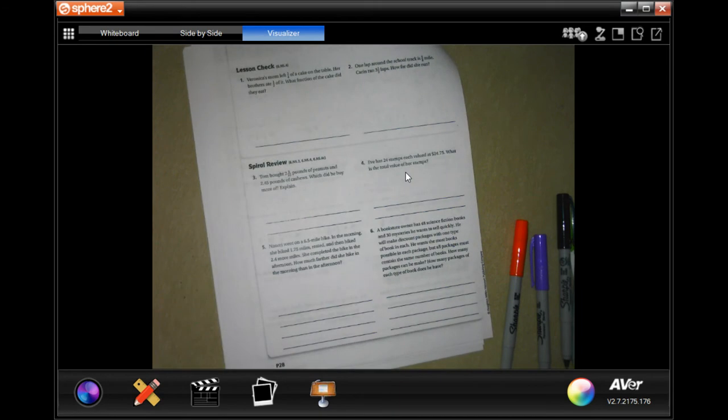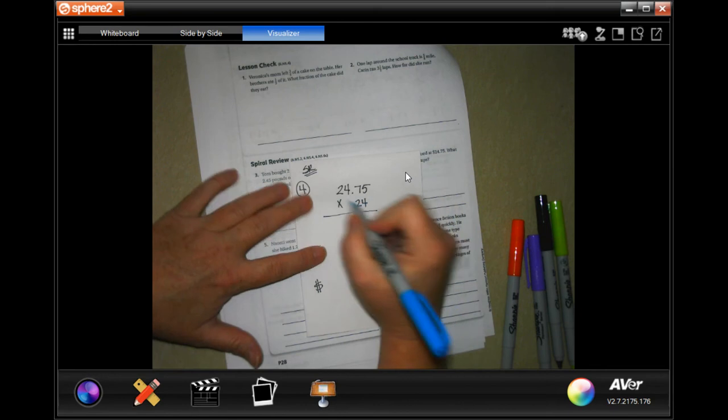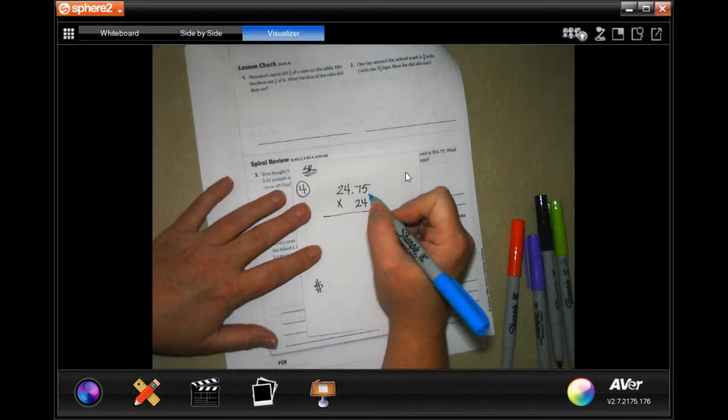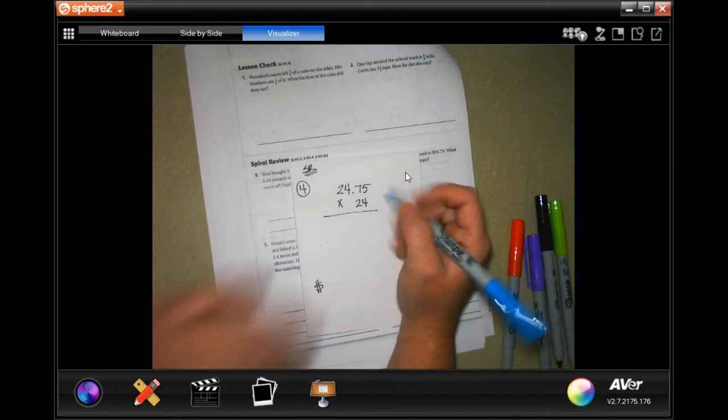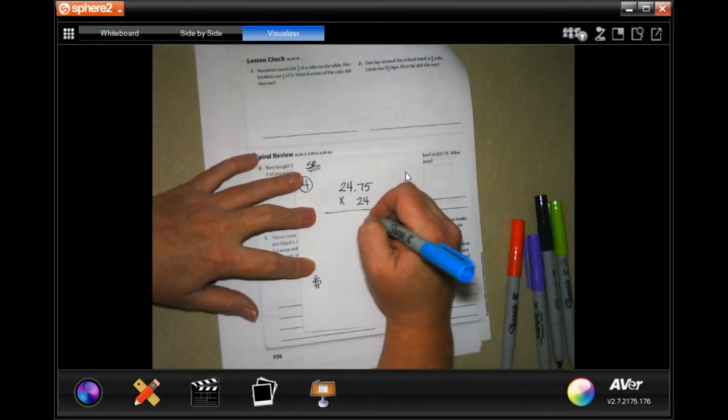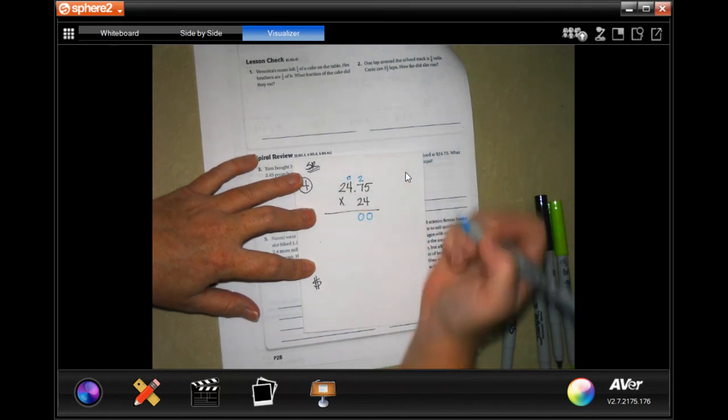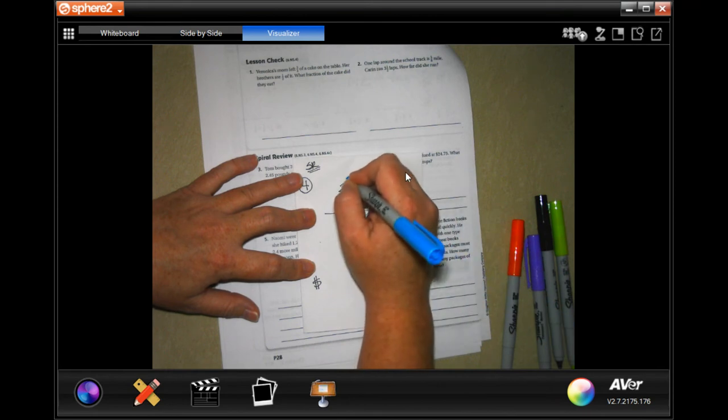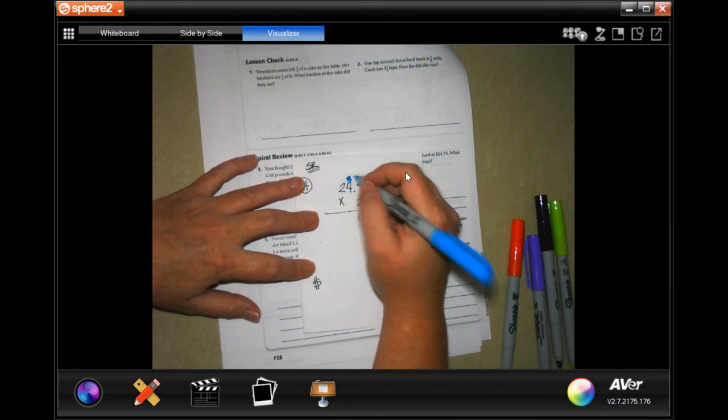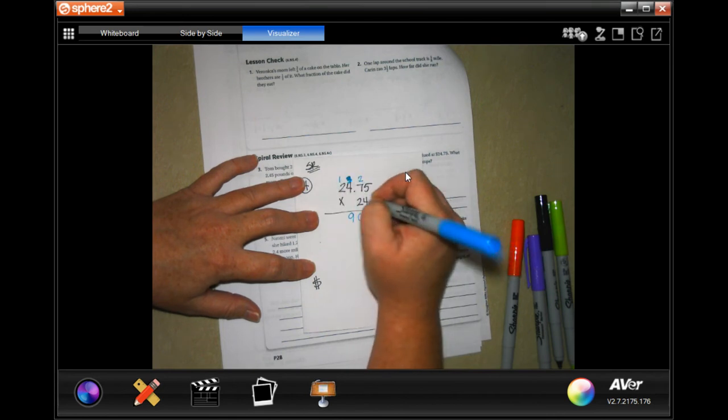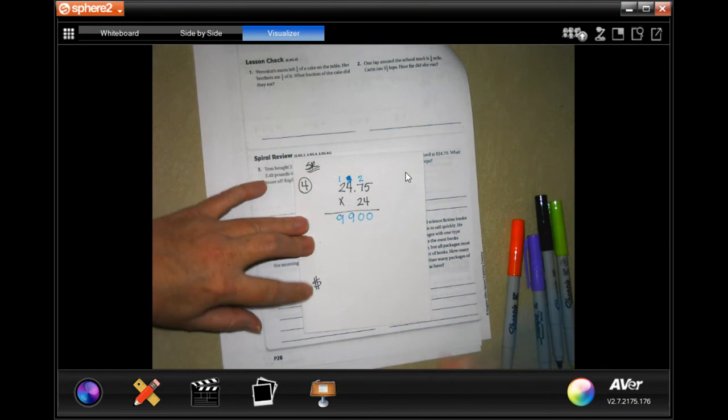We are going to go to number four on the back, which says, Eve has 24 stamps, each value is $24.75. What is the total value of her stamps? Each stamp is worth $24.75 and she has 24 of them. We just need to find out how much that is. 4 times 5 is 20, 0 down, carry your 2. 4 times 7 is 28, plus 2 more is 30. Here's 3, not 0. 4 times 4 is 16, plus 3 more is 19. 4 times 2 is 8, plus 1 more is 9.